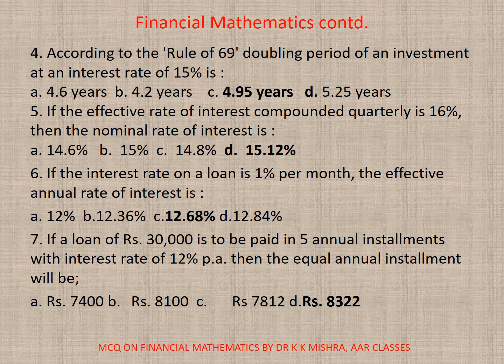Question 6: If the interest rate on a loan is 1% per month, the effective annual rate of interest is — correct option is C — 12.68%.